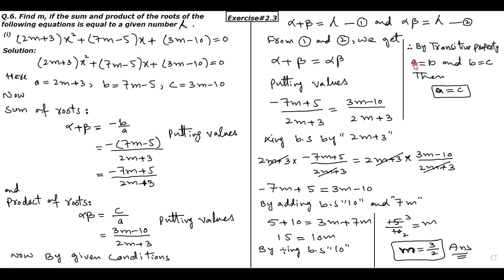Transitive property ke mutabiq agar a barabar hai b ke aur b barabar hai c ke, toh a aur c bhi aapas mein barabar honge. Toh alpha plus beta barabar ho jayega alpha beta ke. Hamare paas alpha plus beta ki value bhi maujood hai aur alpha beta ki value bhi. Dono ka denominator same hai, toh denominator khatam karne ke liye dono sides ko 2m plus 3 se multiply kar diya. Multiply karne ke baad dono sides se 2m plus 3 cancel ho gaya — ider raha minus 7m plus 5 aur udhar raha 3m minus 10.